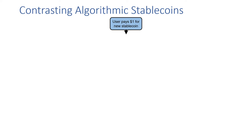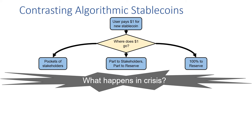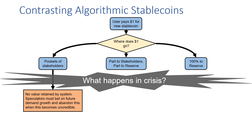There's a further important dimension to understanding algorithmic stablecoins. If the system is actually working, a new user entering the system pays a dollar's worth of assets for any new stablecoin created. An important question is: where does that dollar go? There's a range of possibilities, from going into the pockets of stakeholders to going to some sort of reserve fund. When the assets go to stakeholders through buybacks or dividends, they're removed from the system and not available later to support stability. Instead, we're relying on speculators to bet on future demand growth, and often they abandon the system when these bets become uncredible.